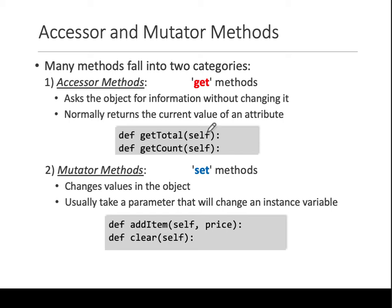These are called get methods or accessor methods. For setting values, they are called mutator methods, because you mutate or make a change when setting a value. When you're getting a value that has been set, you're just accessing it. In our case, get_total and get_count are examples of get methods. To set values, you use add_item, clear, or reset — because you are setting the value of the variable versus getting the value of the variable.